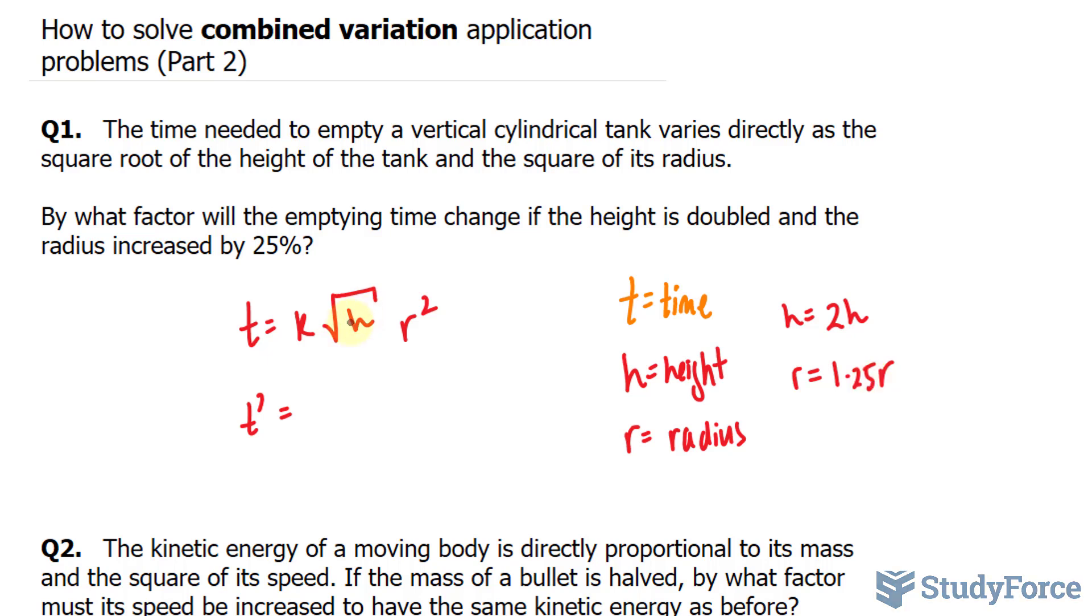Let's substitute these values where we have the h and the r. We end up with k the square root of 2h times 1.25r to the power of 2. Notice that I'm placing 1.25r within brackets and the two outside. That's very important.